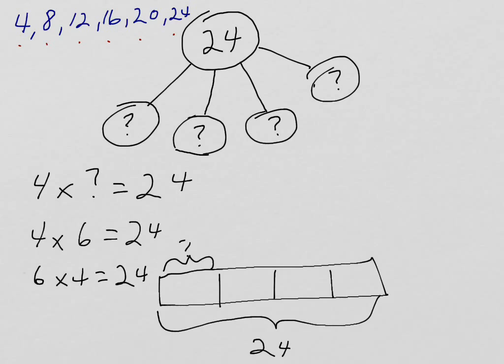But what about division? I could also model this problem using division. And I would do that like this. I would say that I have twenty-four divided into four groups, and then I'd be asking how many are in each group. And I could use the same methods to solve it either way.